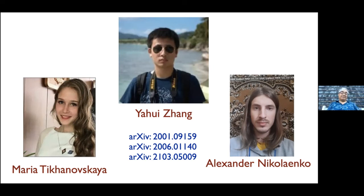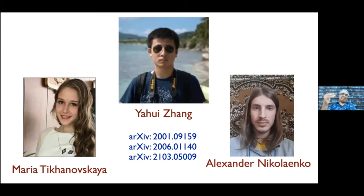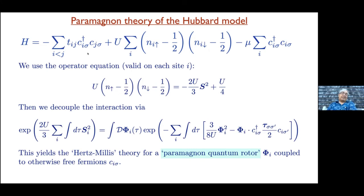The key idea: avoid fractionalizing the electron. In the Kondo lattice theory the conduction electrons were never fractionalized — we fractionalized the spins. So we'll take the same approach here. There's an exact representation of the Hubbard model as electrons coupled to a bosonic spin-1 field φ — really a rotor, since it can have any arbitrary spin. You take the Hubbard interaction and decouple via this φ field, which carries angular momentum in spin space.